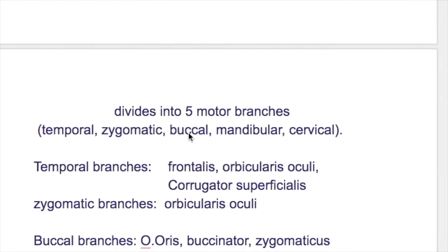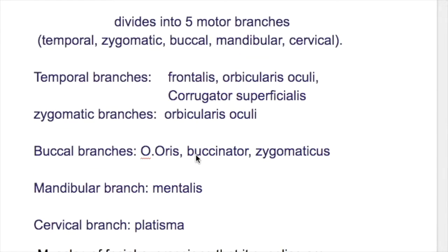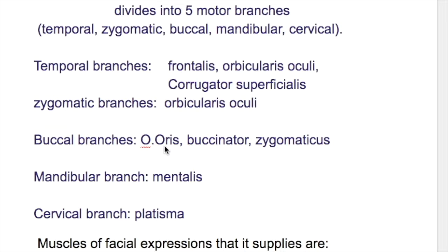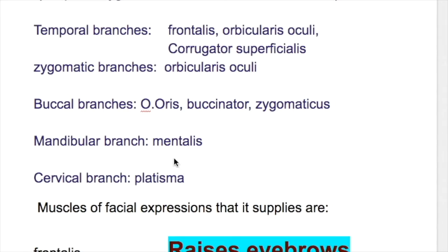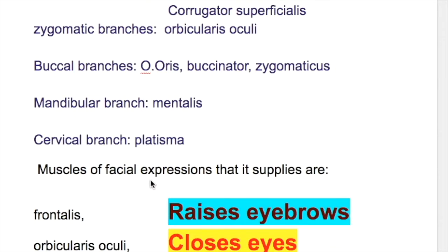The five major branches are: temporal, zygomatic, buccal, mandibular, and cervical. Temporal branches supply the occipitofrontalis and orbicularis oculi; zygomatic supplies orbicularis oculi; buccal branches supply orbicularis oris and buccinator; mandibular supplies mentalis; and cervical supplies platysma.